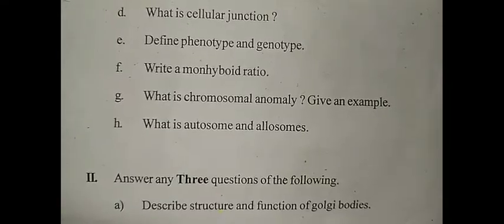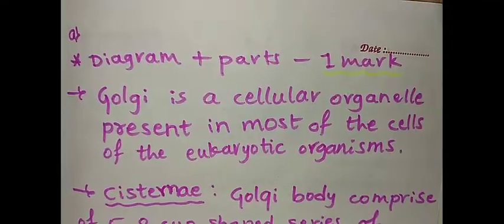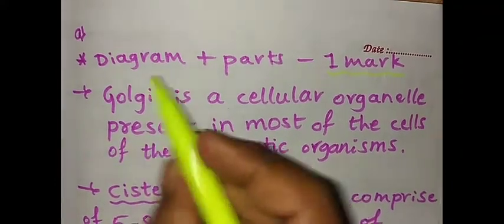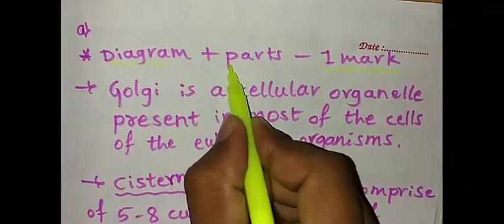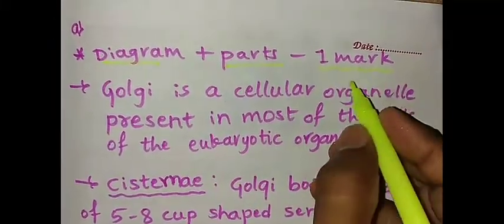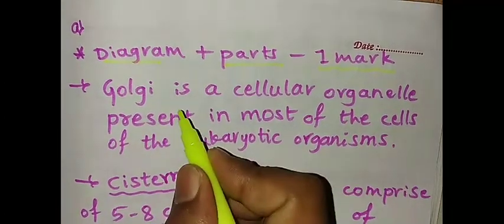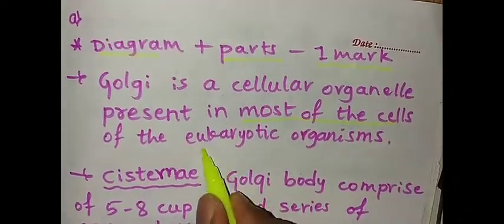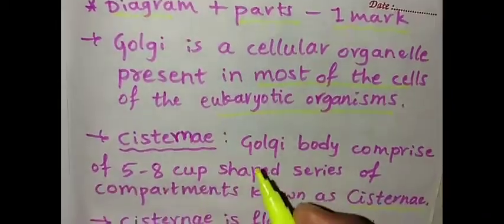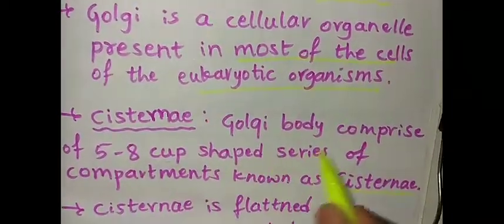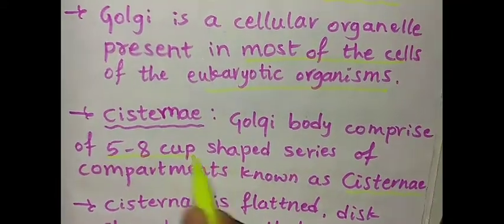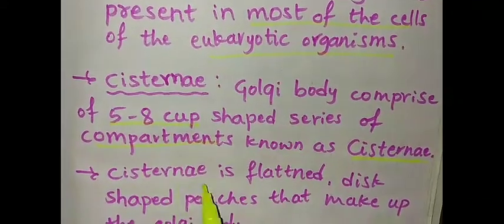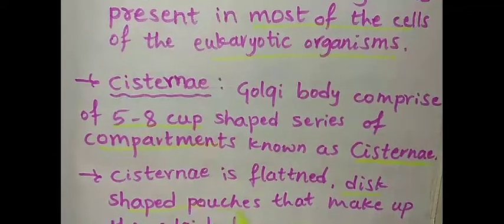The first question is: describe the structure and function of the Golgi body. They have asked the structure and function, so you have to draw the diagram and label the parts, then you can get easily one mark. Golgi is a cellular organelle present in most of the cells of eukaryotic organisms. Its parts are cisternae - Golgi body comprises of five to eight cup-shaped series of compartments known as cisternae, which are flattened disc-shaped pouches that make up the Golgi body.